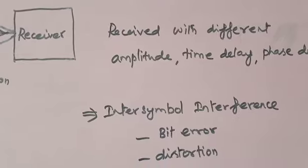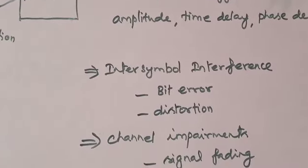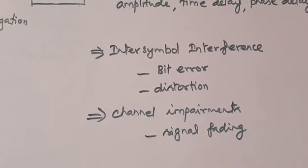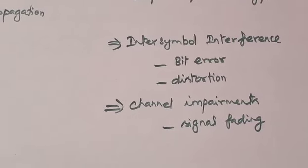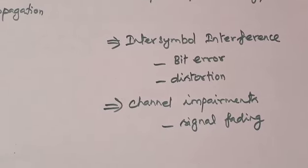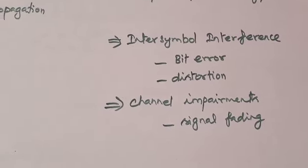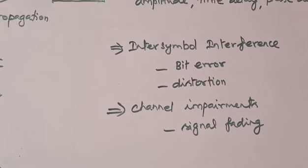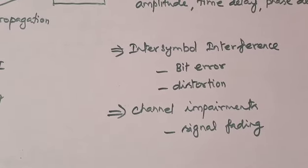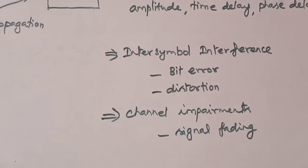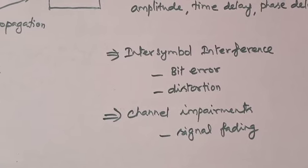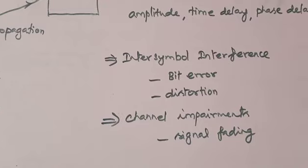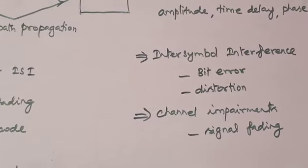Due to the multipath propagation, the modulation bandwidth increases and thus inter-symbol interference will occur. This inter-symbol interference will increase the bit error rate and thus the distortion will be increased at the receiver. One more effect due to the multipath propagation is the channel impairments, which will cause signal fading at the receiver.